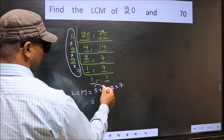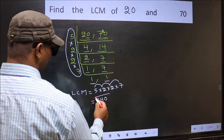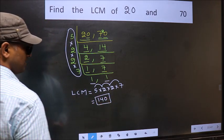5 into 2 is 10, 10 into 2 is 20, 20 into 7 is 140. 140 is our LCM.